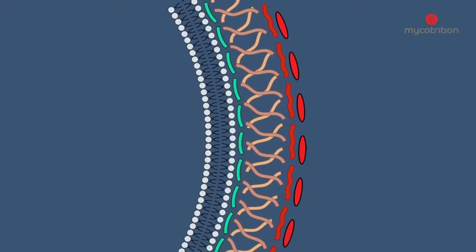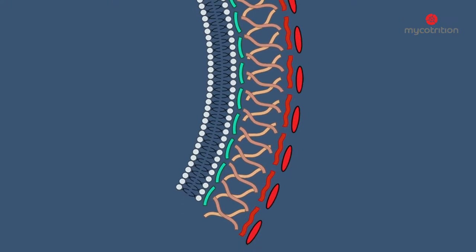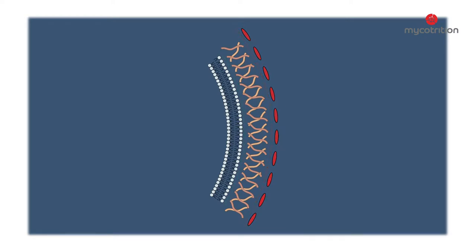The mushrooms' most important ingredients, the polysaccharides, are locked in place by protein and chitin structures. Not even the finest grinding can break up these structures. This is only possible through the process of extraction.